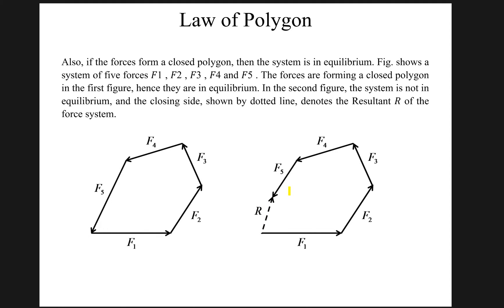Also, there are two scenarios. It says that if forces form a closed polygon, then the system is in equilibrium. In the first case you can see the polygon is closed, which means the system is achieving its equilibrium state.